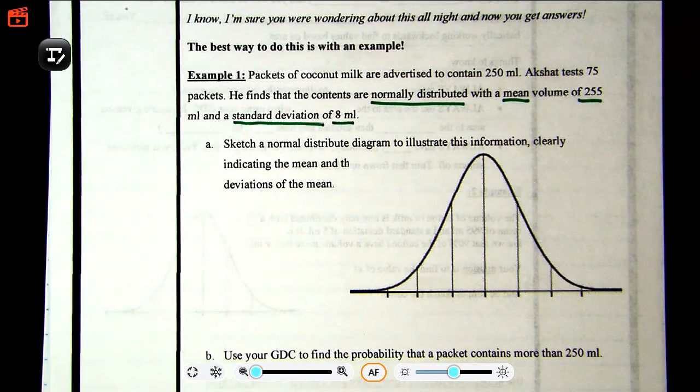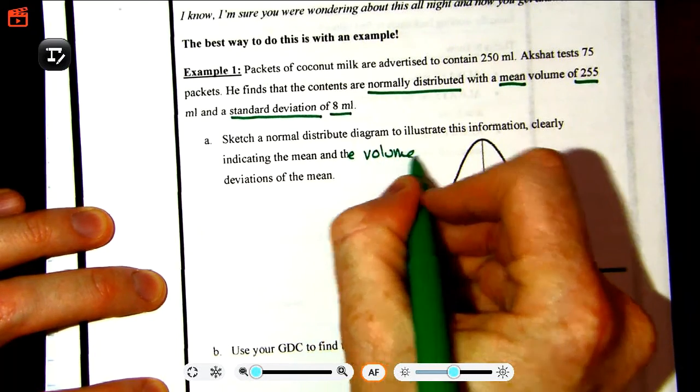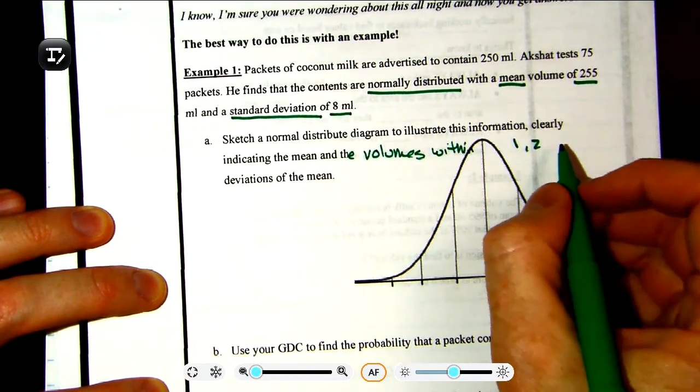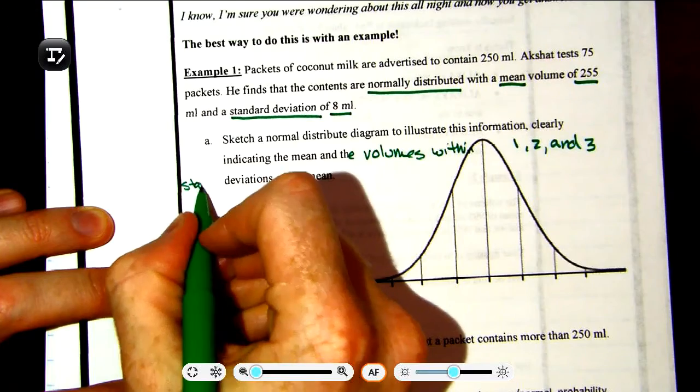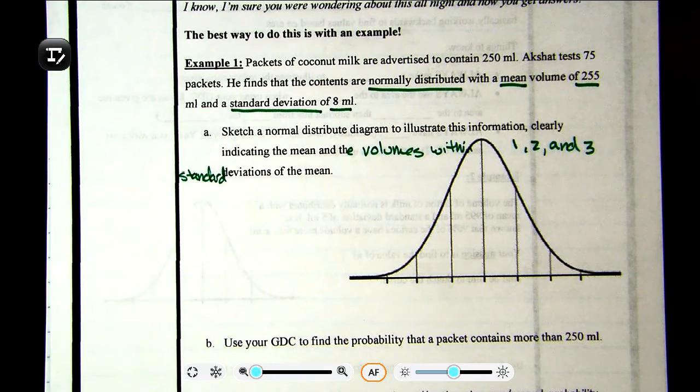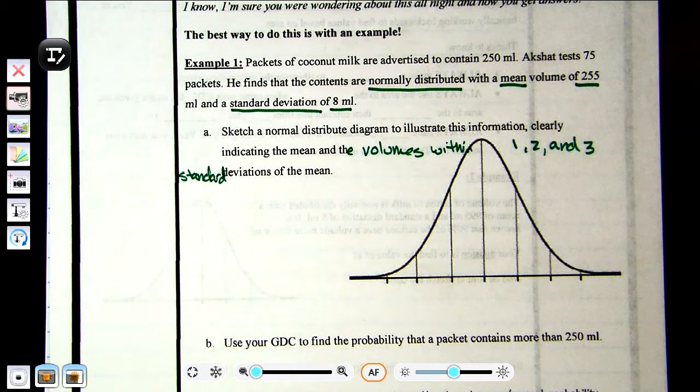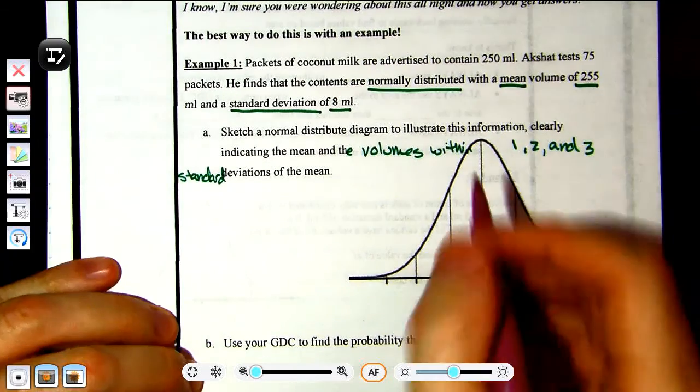It says sketch a normal distribution diagram to illustrate this information, clearly indicating the mean and the volumes within one, two, and three standard deviations of the mean. Basically we're just going to take this situation and represent it on the normal curve. As a reminder, mu, or mean, is that middle value.